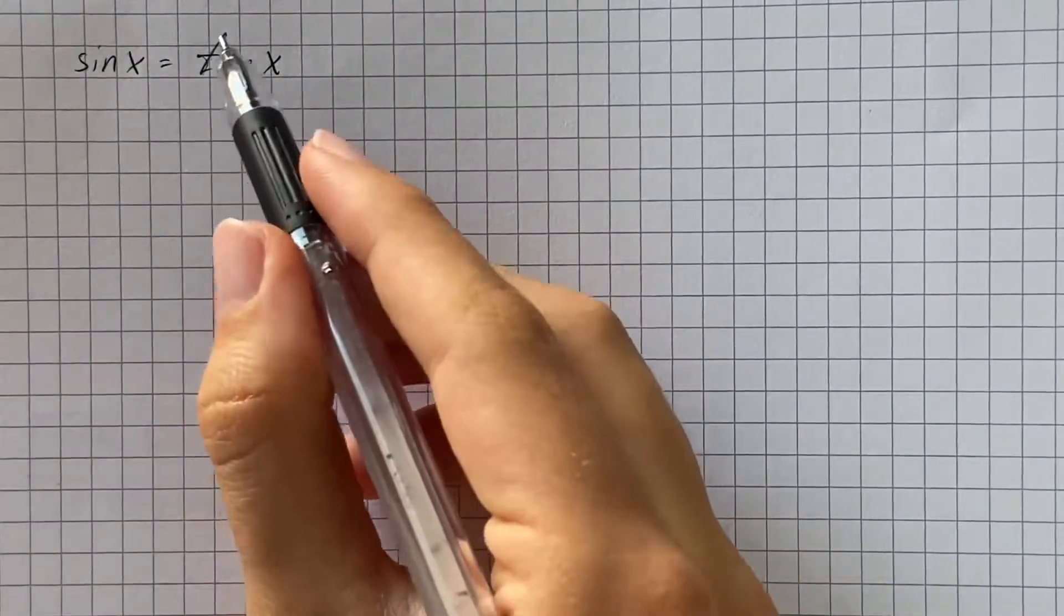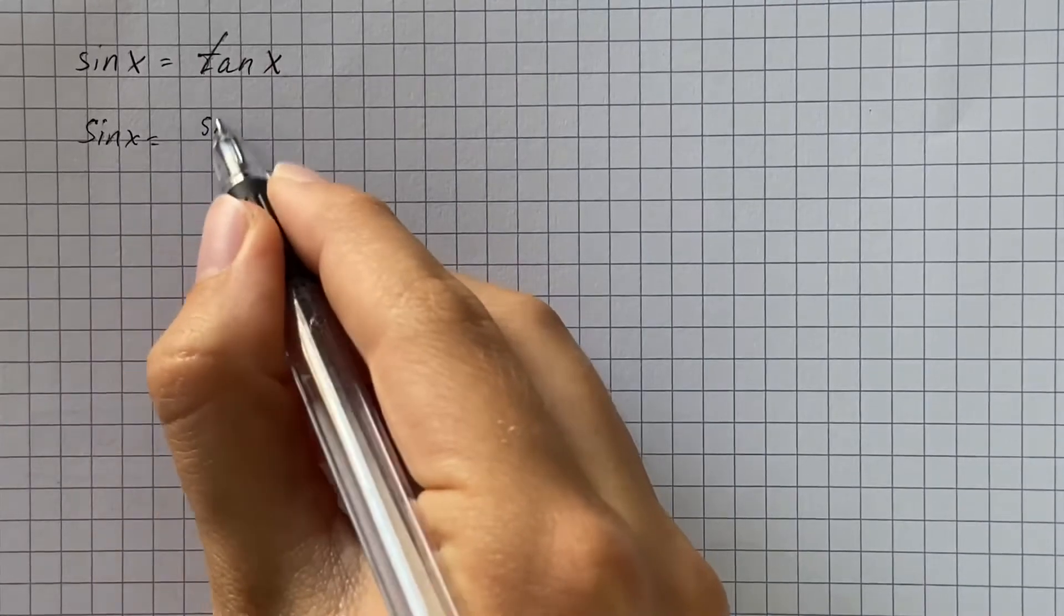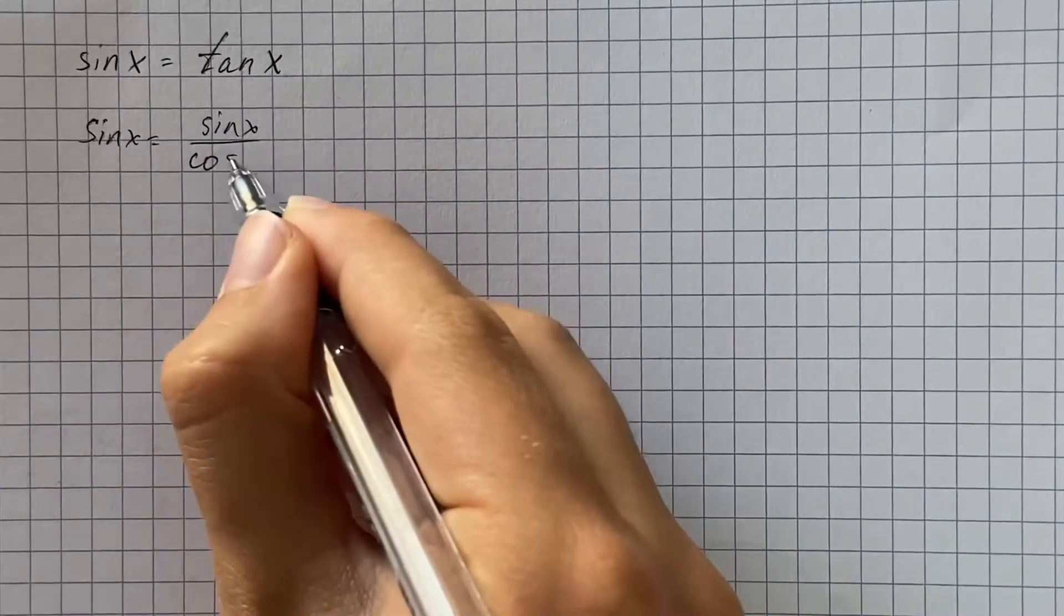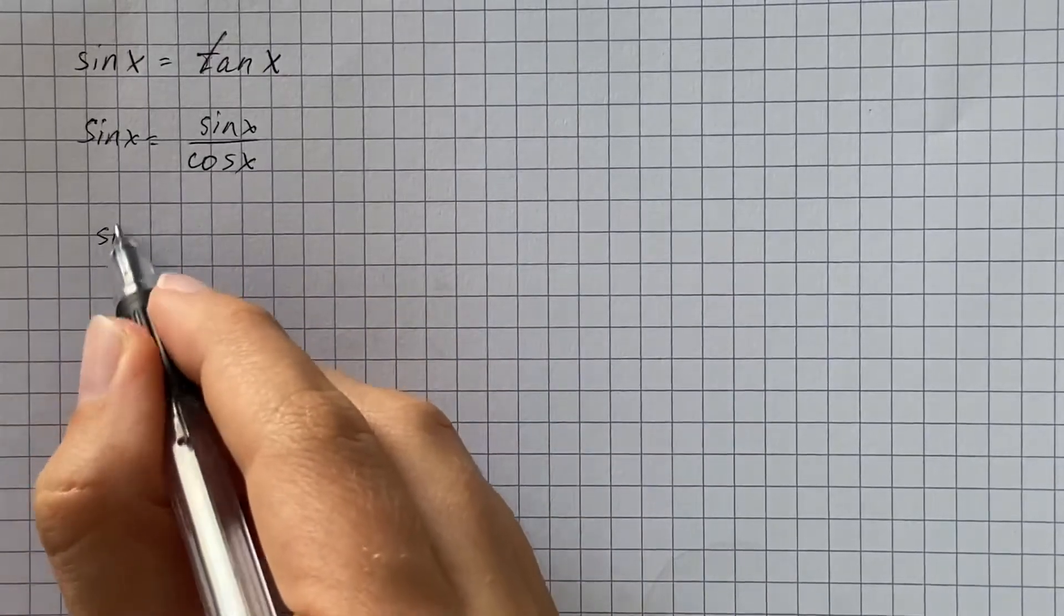The first thing we're going to do is write tangent of x as sine of x over cosine of x. Then we're going to subtract sine of x over cosine of x from both sides.